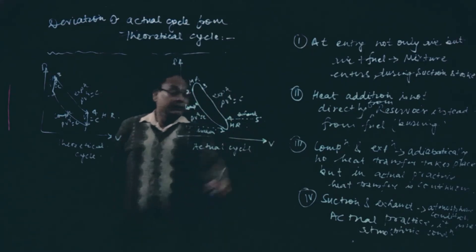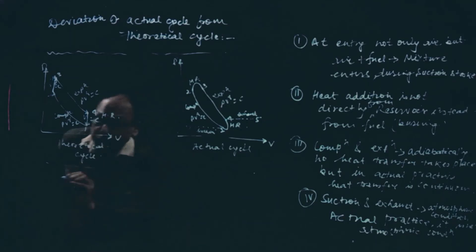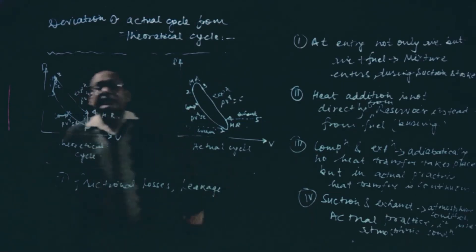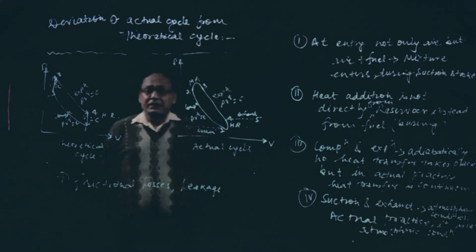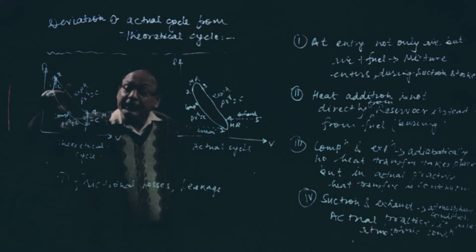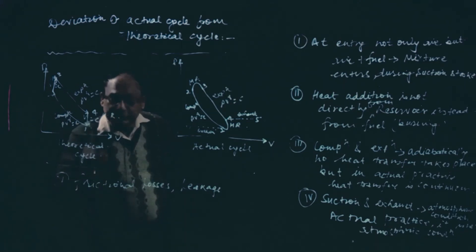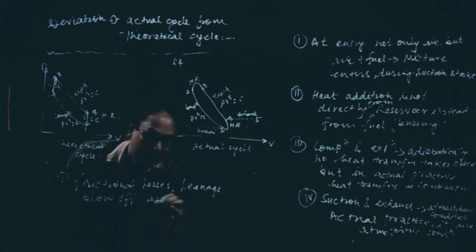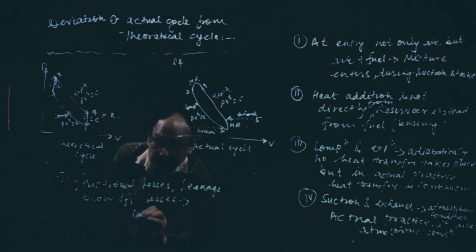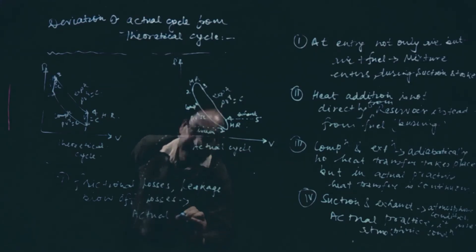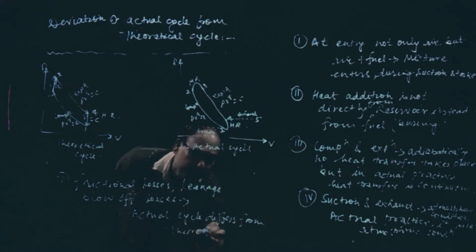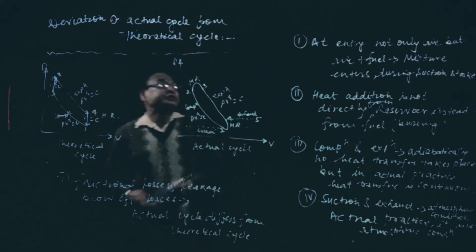Another reason: there are so many losses — frictional losses, leakages, blow-off losses. While deriving the thermal efficiency of the engine, we did not consider any type of losses. But in the actual condition, there are so many losses — frictional losses, leakage, blow-off losses — and due to these losses, the actual cycle differs from the theoretical cycle. There are so many other reasons also, but these five to six points are very important.